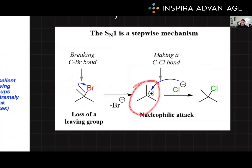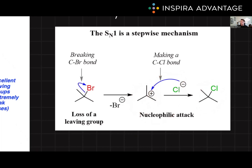Once the leaving group leaves, we have a carbocation intermediate, which is very reactive — there's a positive charge here. In the second step, the nucleophile attacks the planar carbocation from either side, resulting in a racemic mixture of products. In this case, chlorine could attack from the top or the bottom, so we don't know the chirality of the product. The rate of SN1 is entirely dependent on the concentration of the substrate and the reaction constant. SN1 reactions are favored in polar protic solvents, which stabilize the carbocation intermediate through solvation, and they typically involve substrates with more substituted carbons, making the carbocation more stable.